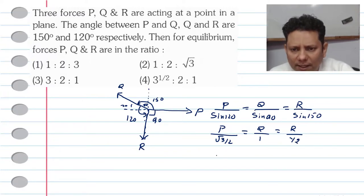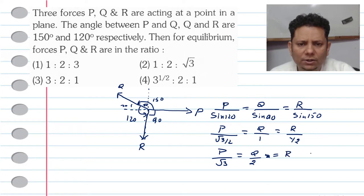Now if we multiply by 2, we will get P divided by root 3 will be equal to Q divided by 2, will be equal to R.